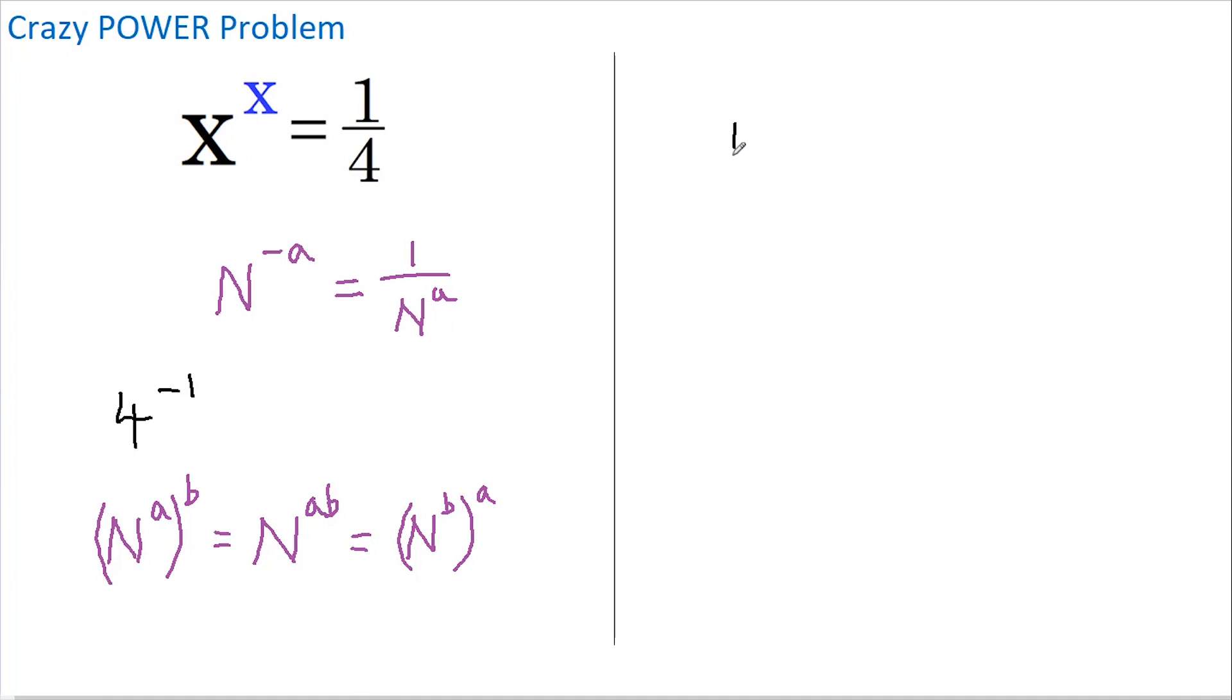Okay, now I'm going to take our 4 to the minus 1 and I'm going to add 2 more powers. I'm going to raise all of this to the power of 2, and then I'm going to take the square root of it.